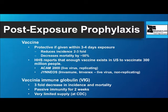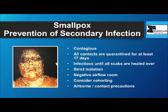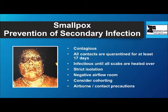There is also a vaccinia immune globulin to provide passive immunity for those who cannot take the vaccine. Secondary infection is a big problem — all contacts would have to be quarantined for 17 days until they either develop the disease or remain clear. Patients are infectious until the scabs heal over and separate, so they need strict isolation: a negative airflow room. If there were a big outbreak, one should consider cohorting patients in a ward or identifying a single institution for all smallpox patients, with airborne and contact precautions.